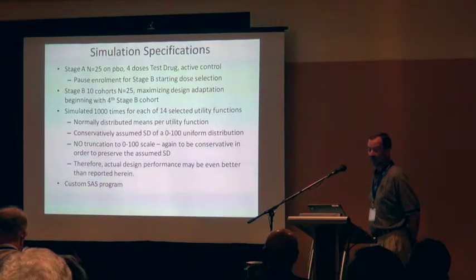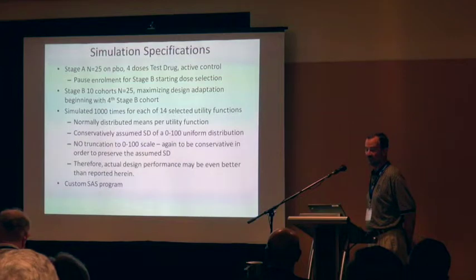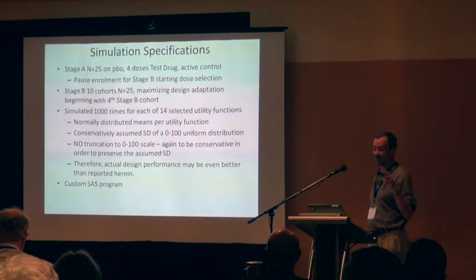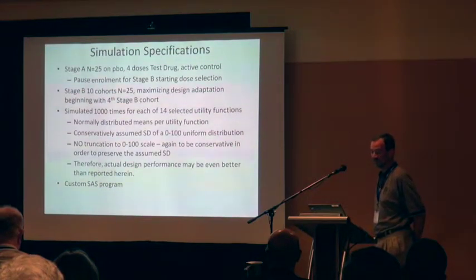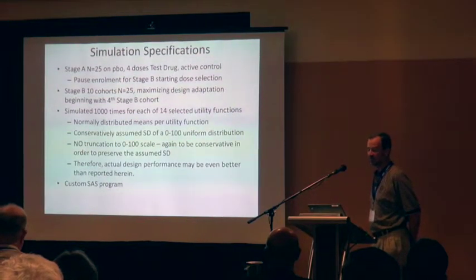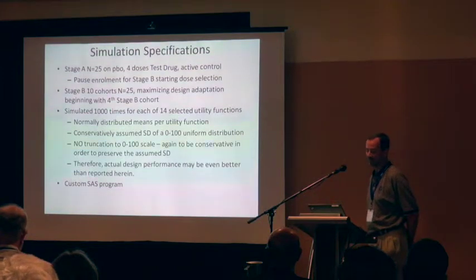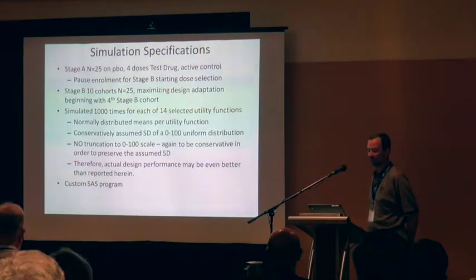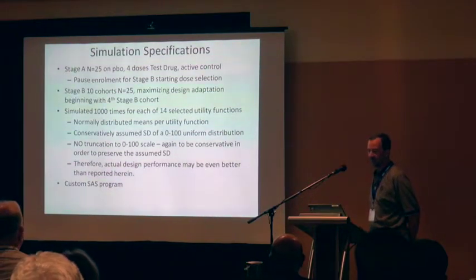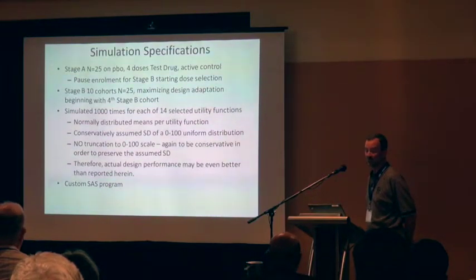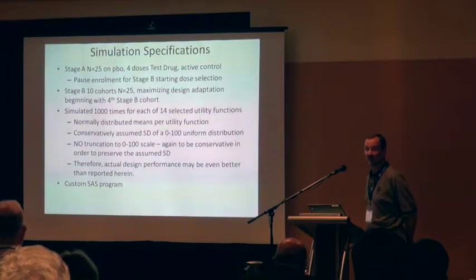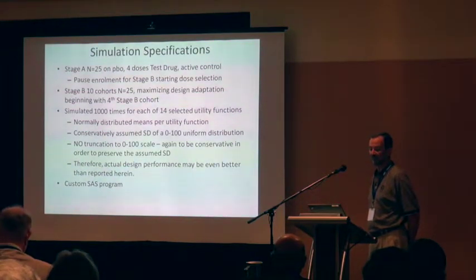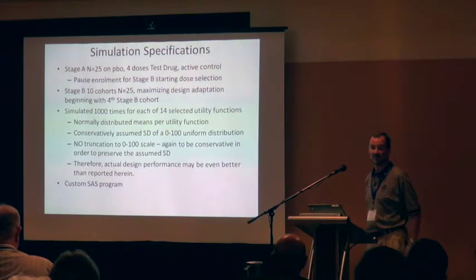We simulated according to these specs: 25 on each dose in stage A, and then 10 cohorts of 25 randomized in the ratios discussed, with two doses picked per the algorithm for each set of cohorts. We did 1,000 simulations of each curve, assumed normally distributed clinical utility function values, and picked a conservative standard deviation based on a uniform from 0 to 100. We didn't truncate values, so the normal distribution could simulate clinical utility values less than 0 or greater than 100, even though the means were within that range — done to be conservative.